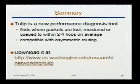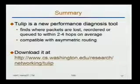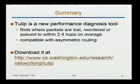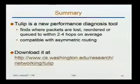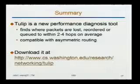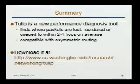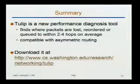To summarize: Tulip is a new performance diagnosis tool that finds where packets are lost, reordered, or queued to within two to four hops on average, depending on what problem you're diagnosing and the path involved. The biggest contribution compared to existing tools is that Tulip is fully compatible with asymmetric routing — it measures forward paths to routers rather than round-trip paths, making diagnosis more accurate. Source code and packages for Red Hat and Debian are available at the website shown. Thank you.